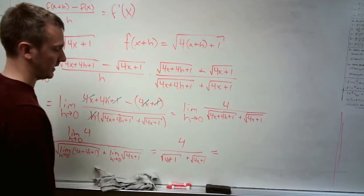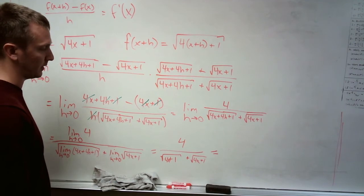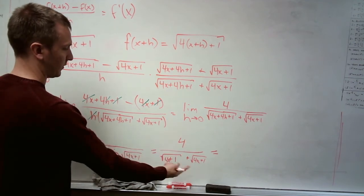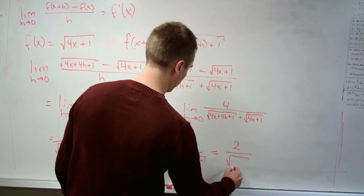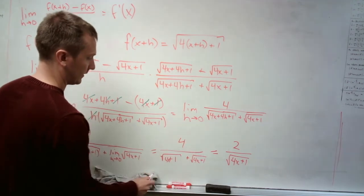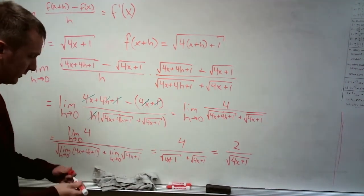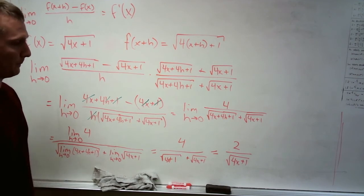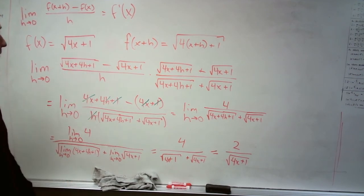All right, so we have two roots of 4x plus 1 in the denominator. So this will cancel out with the 2 that we get here, which just brings us to 2 over the root of 4x plus 1. Again, the 4 cancels with the 2 that we get from having the 2 times the root of 4x plus 1. And that's it. That's the derivative of the square root of 4x plus 1.